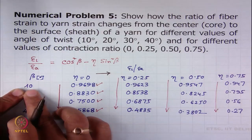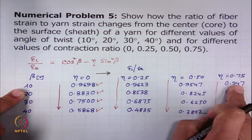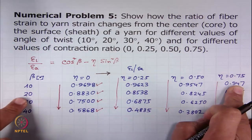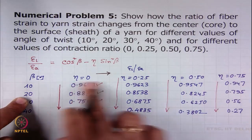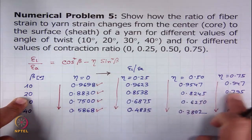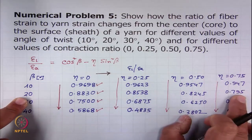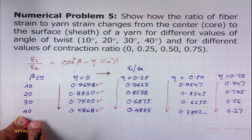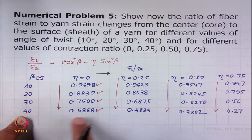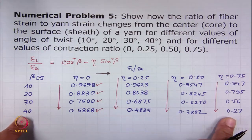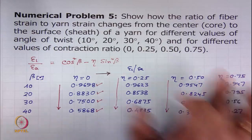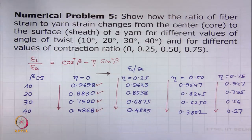When beta is less this effect is less. When beta is as high as 20 degrees, we see that as the contraction ratio increases the same trend is there. However, the effect is a little higher. When beta is 40 degrees, if we increase the contraction ratio the values change remarkably from 0.59 to 0.48 to 0.32 to 0.27. This can also be observed from this data.